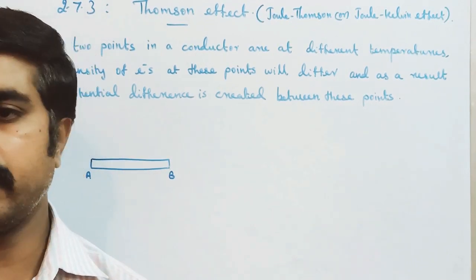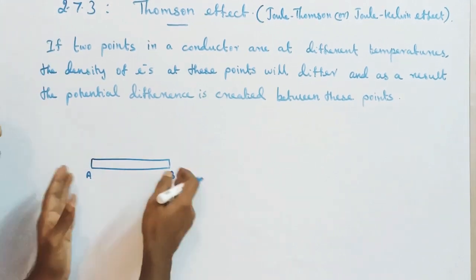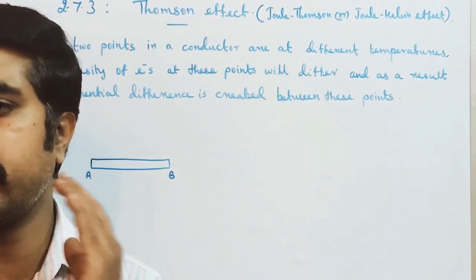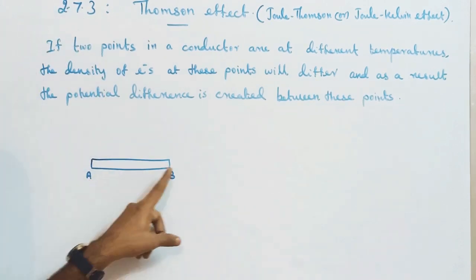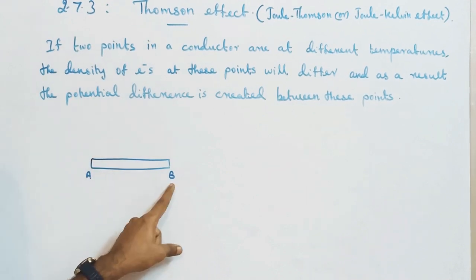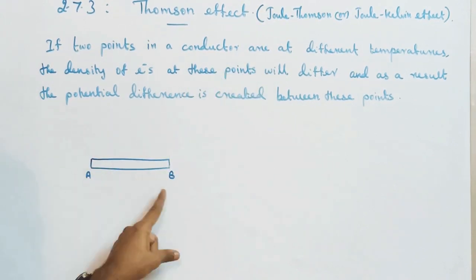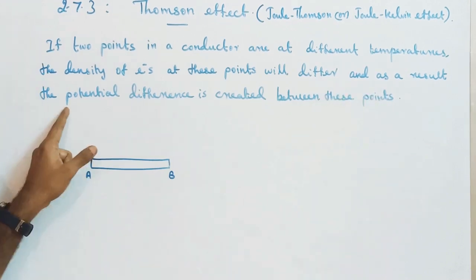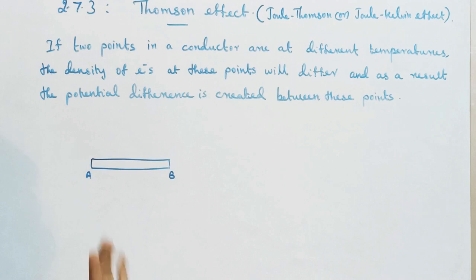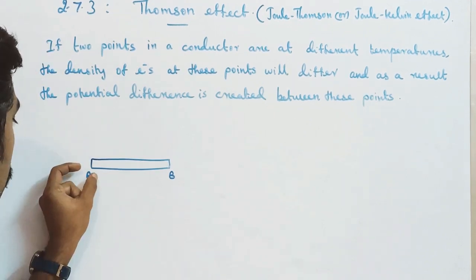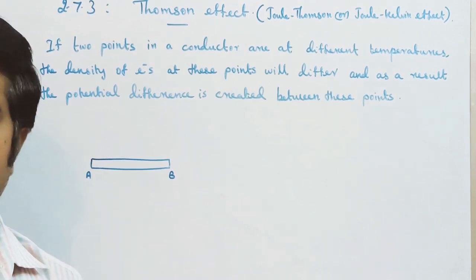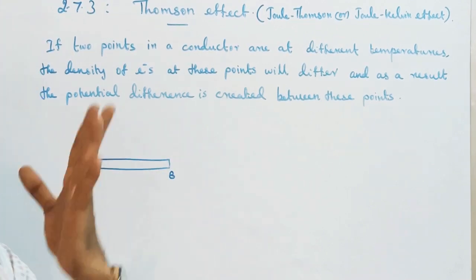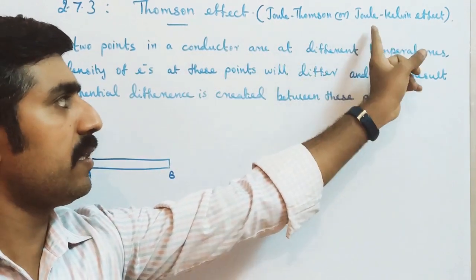Because of the temperature change, electron density will change, and this will produce a potential difference. The maximum number of electrons are at the colder region and the minimum at the hotter region. So a potential difference is produced. As a result, at one point heat is absorbed and at another point heat is evolved. That effect is called the Thomson effect, or Joule-Thomson effect, or Joule-Kelvin effect.